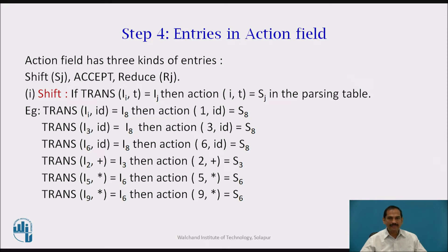The entries in the action field are developed for the terminal symbols. The action field has three kinds of entries: shift, accept, and reduce. For shift: if we have a transition from Ii to T equal to Ij, then the action of Ii,T equals Sj in our parsing table. So transition I1,ID gives I8, then action[1,ID] = S8. Transition I3,ID equals I8, then action[3,ID] = S8.